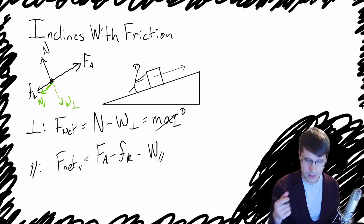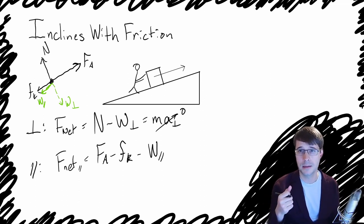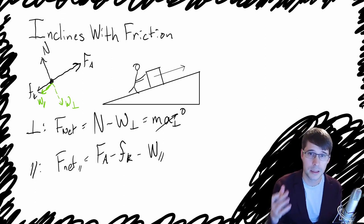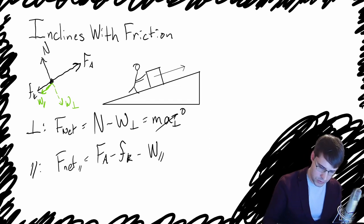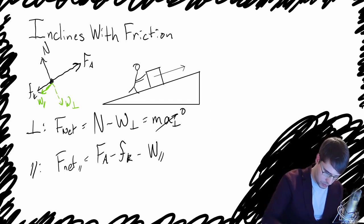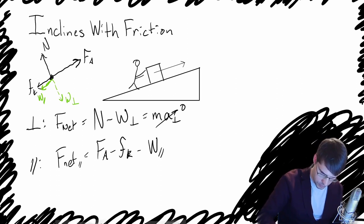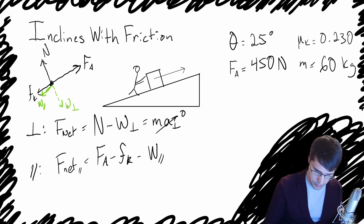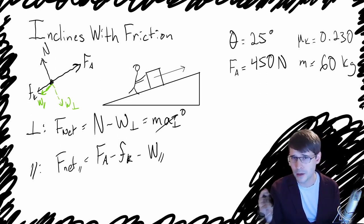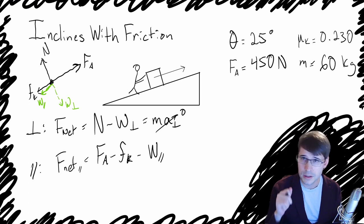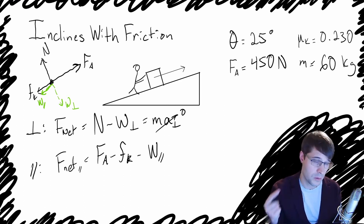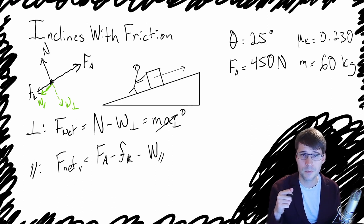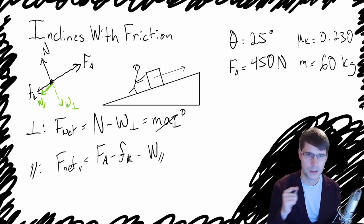Now if you were doing this with a question, they probably would have already given you some numbers. I just wanted to start it off theoretically looking at the equations. What we're going to do now is add in some values. We've got theta, a value for the angle, a value for the coefficient of friction, the applied force, and the mass of the block. From there, we're going to find the weight, the perpendicular and parallel components of the weight, and then solve for the acceleration.